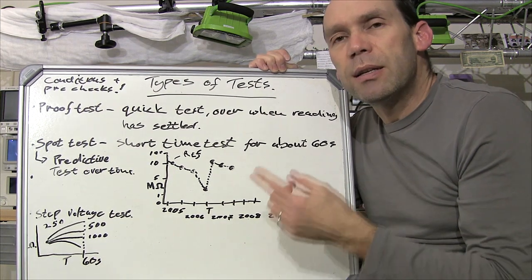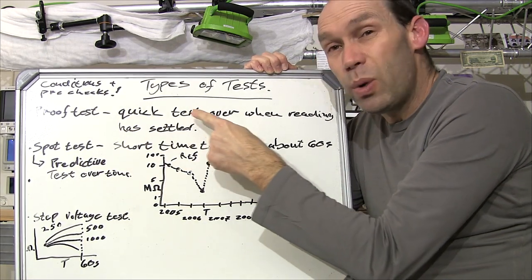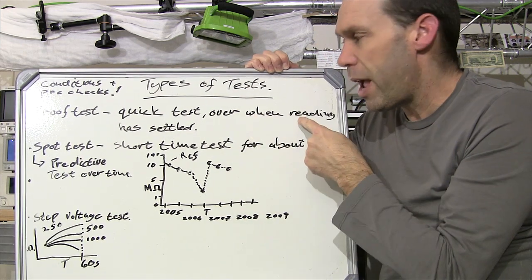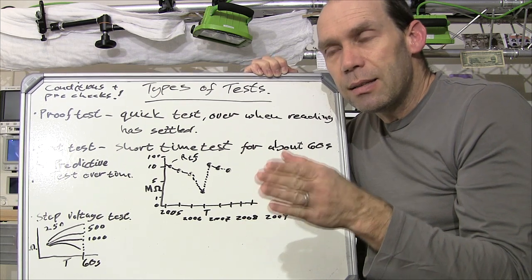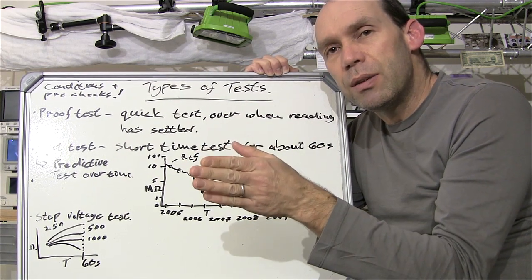Now the first little test that I did on the kettle, that would have been called a proof test. So that was a very quick test and literally I only took the time to wait for the actual reading to settle. So it was less than 60 seconds. I just waited until I got a steady reading and then I took that as the reading.